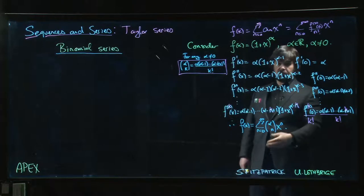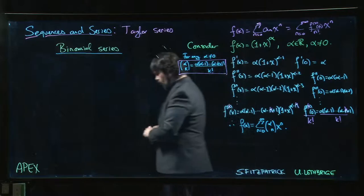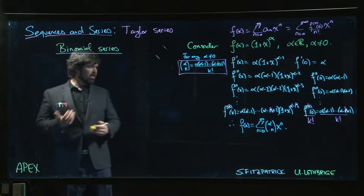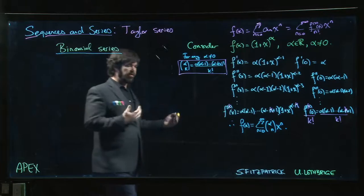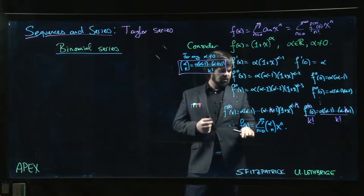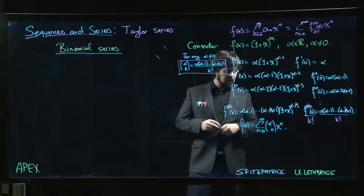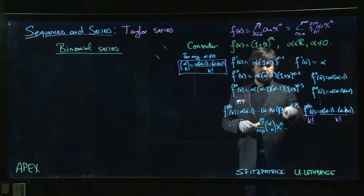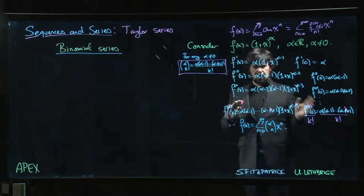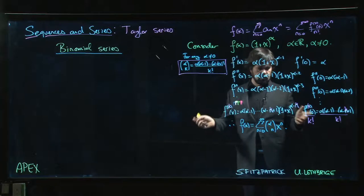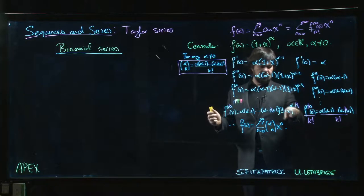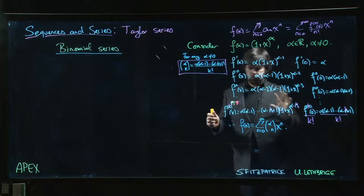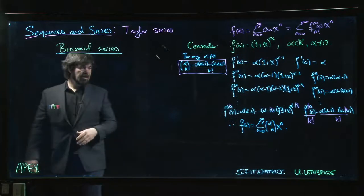Let's just write down the binomial series now. We could play around with remainder estimates and confirm that we do indeed have equality between the series and the function. The remainder estimates get a little bit tricky to work with, partly because we have to think about the value of alpha here - depending on where it lands, whether it's positive, negative, bigger than one, smaller than one, things like that.